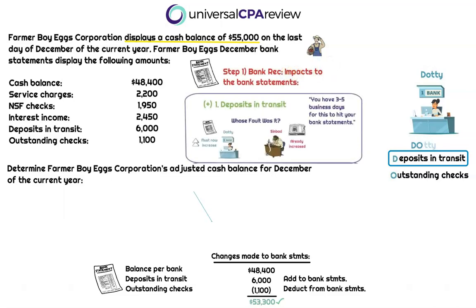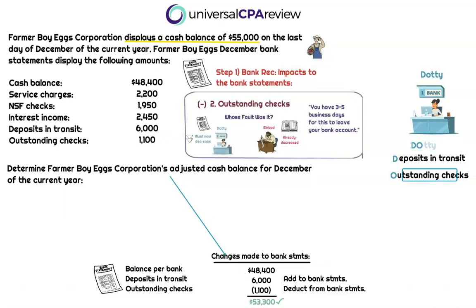Deposits in transit — the D in Dottie's name — is $6,000, and this is always added to the bank statement cash balance. So we have $48,400 plus $6,000. We add it because when the deposit was made by Farmer Boy Eggs, the bookkeeper already recorded it — cash came in, it just hasn't hit the bank statements yet. Then, outstanding checks — the O — is $1,100, which is a reduction to the bank balance, because the bookkeeper already recorded this cash outflow, but the bank says it takes three to five business days to leave the account.